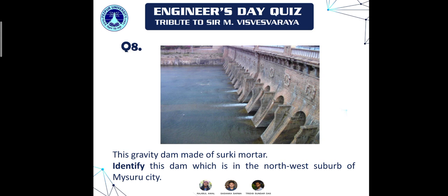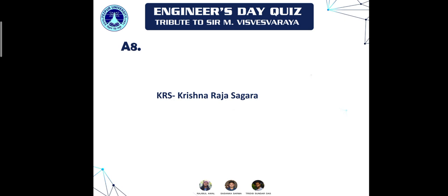Moving on to question eight: identify this gravity dam made of Surkhi mortar, located in the northwest suburbs of Mysuru city. The designer of this dam is also Sir M. Visvesvaraya. The answer is the Krishnarajasagar Dam — KRS.